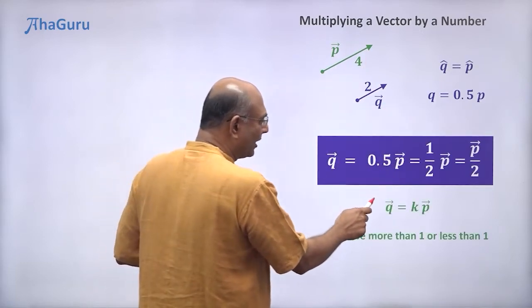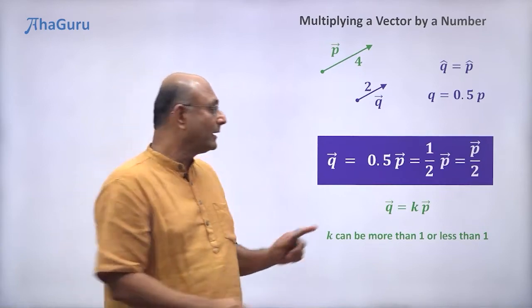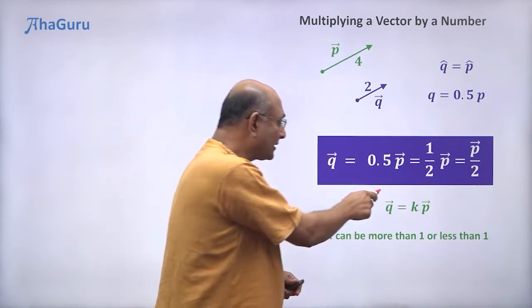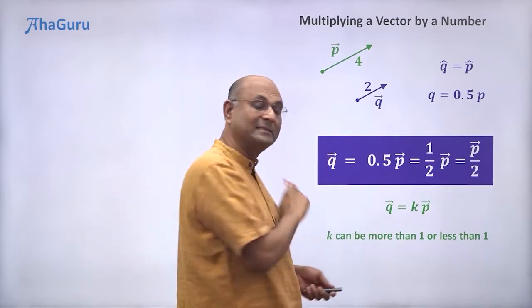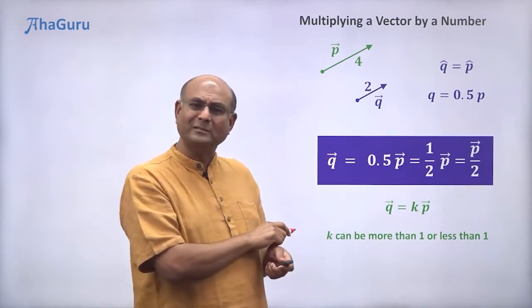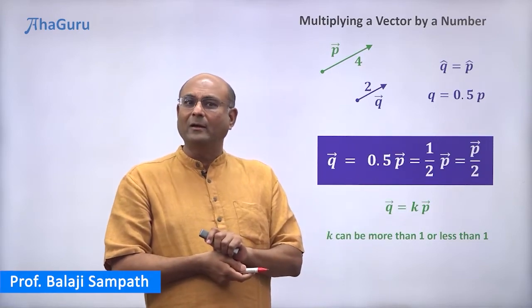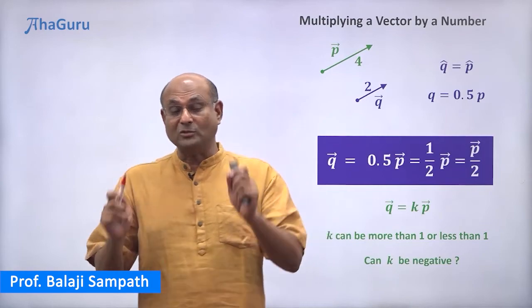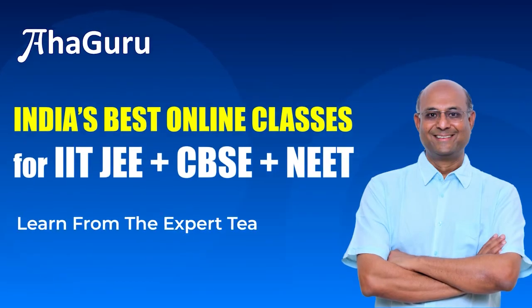Whenever you want to write q vector as something times p vector, it is possible if they have the same direction. We saw that k can be greater than 1 or less than 1. You might be thinking that we are using only positive multiplying numbers — can k be negative? Yes, that is also possible as we will soon see.